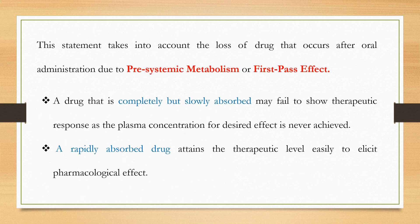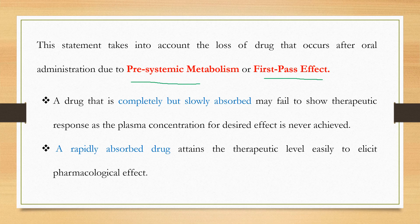This statement takes into account the loss of drug that occurs after oral administration due to pre-systemic metabolism or the first-pass effect. A drug that is completely but slowly absorbed may fail to show the therapeutic response if the desired plasma concentration is never achieved. A rapidly absorbed drug can attain the therapeutic level easily — it crosses the minimum effective concentration, reaches the therapeutic level, and the therapeutic and pharmacological effect is achieved.